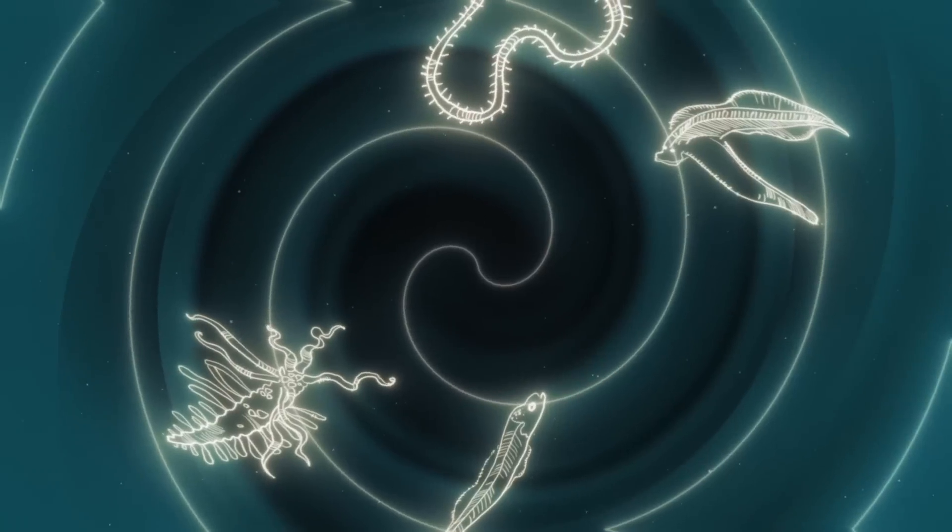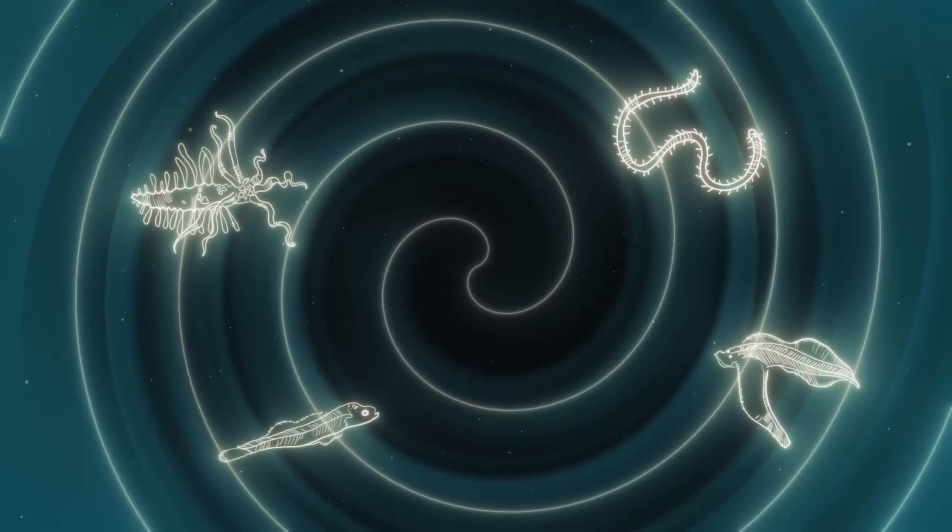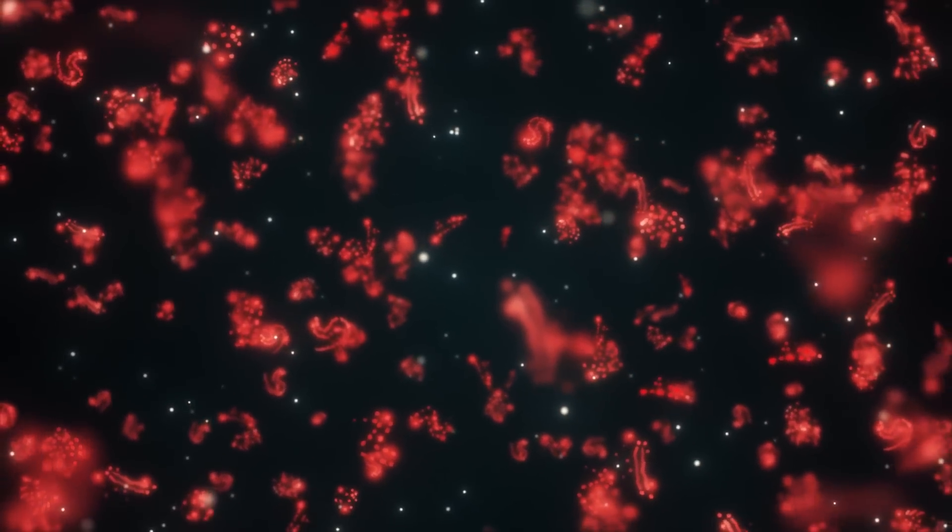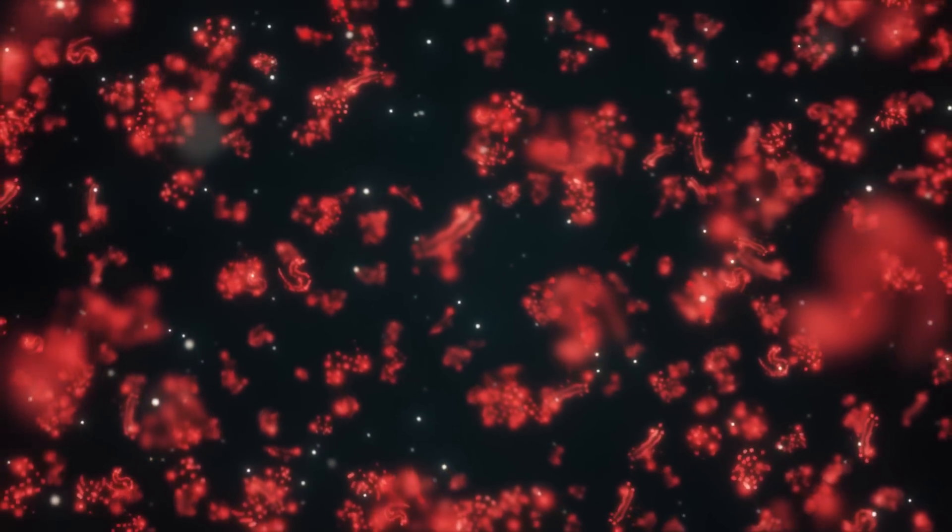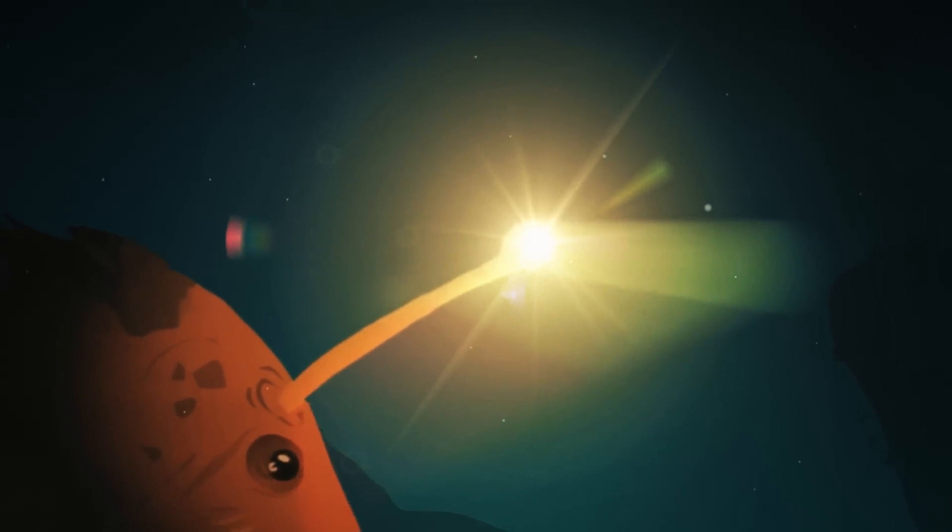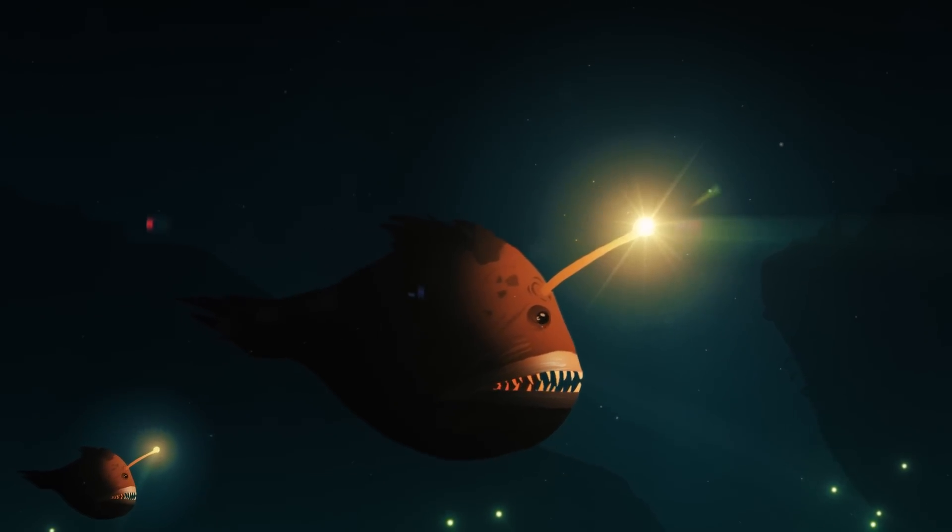To survive in dark, barren trenches, organisms have taken bizarre evolutionary turns. Several creatures, like sea cucumbers, navigate the deep sea with specialized bioluminescent cells. Others, like anglerfish, use colonies of bioluminescent bacteria to hunt and lure their prey.